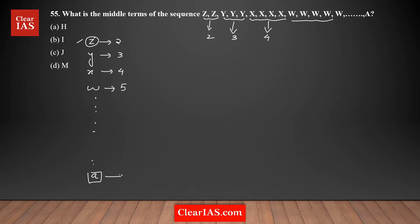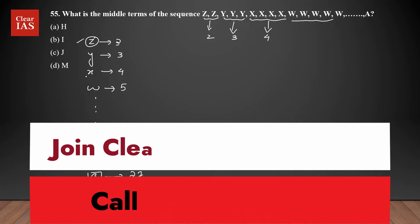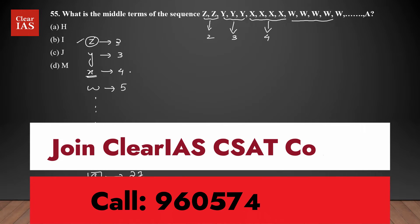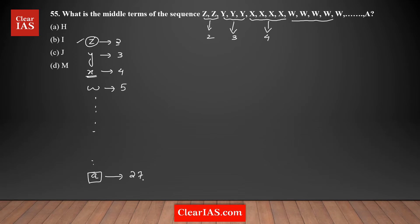The 26th letter will be repeating how many times? 27 times — because you are adding one each time. The first letter repeats two times, the second letter three times, the third four times, so the 26th letter will repeat 27 times. This describes the total sequence.